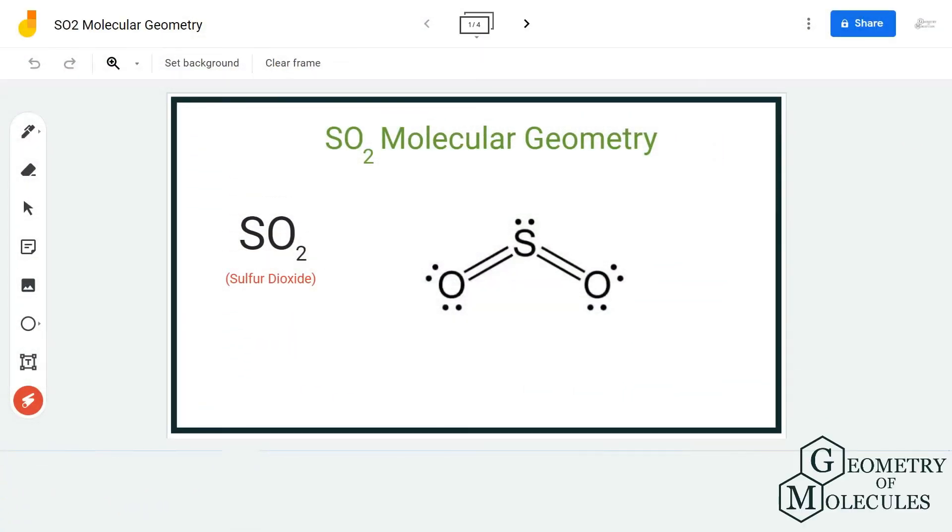Hi guys, welcome back to our channel. In today's video, we are going to help you determine the molecular geometry for SO2 molecule, which also has a chemical name of sulfur dioxide. To understand its molecular geometry, we are first going to look at its Lewis structure.